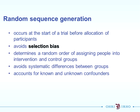Let's go through by domain. You have the slides for reference later. We'll go through domain by domain, and for each domain we'll have a poll. What is random sequence generation? It occurs at the start of the trial before the allocation of patients and avoids selection bias. It determines the random order of assigning people into the intervention and control groups and avoids systematic differences between groups.